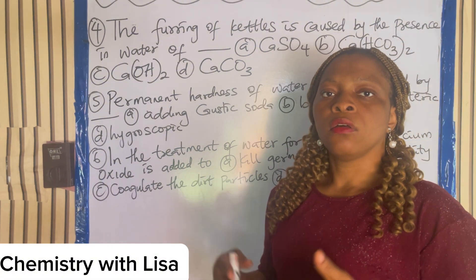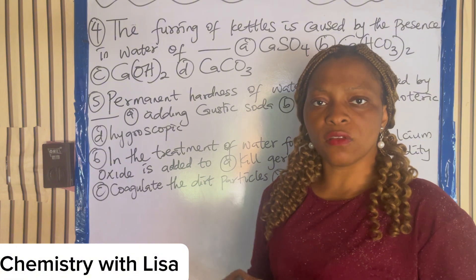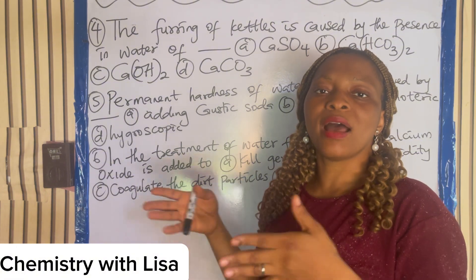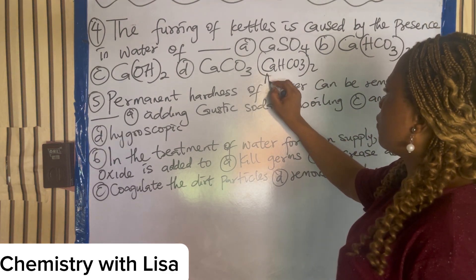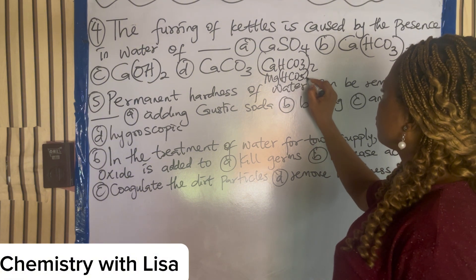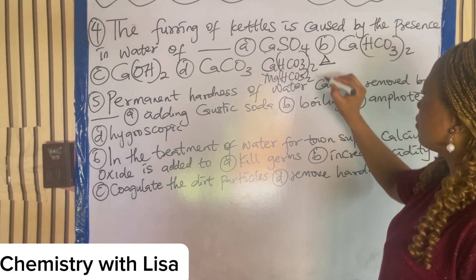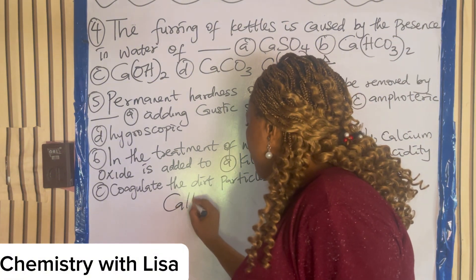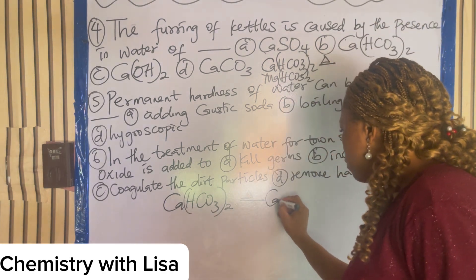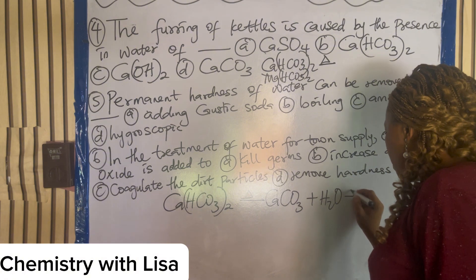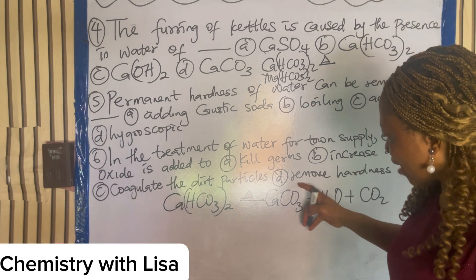What actually causes the furring of boilers or kettles is the presence of temporal hardness. When you boil your water, it removes temporal hardness — that is calcium hydrogen carbonate, Ca(HCO₃)₂, and magnesium hydrogen carbonate. When you heat calcium hydrogen carbonate, it is very unstable. It gives you calcium carbonate (CaCO₃) plus water plus carbon dioxide.